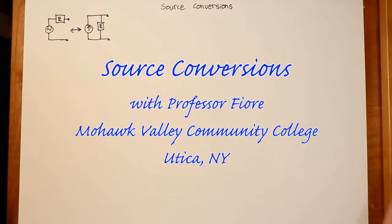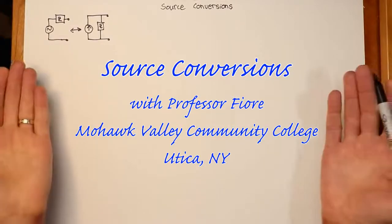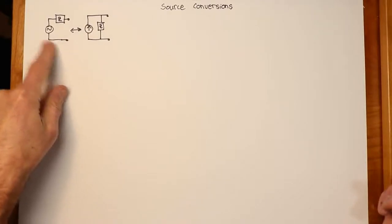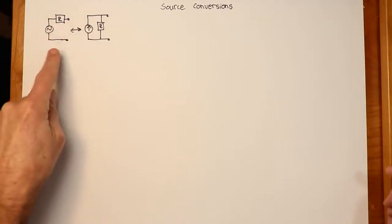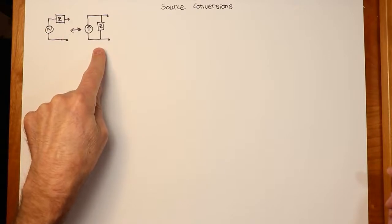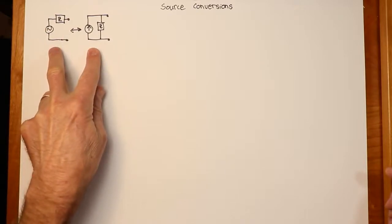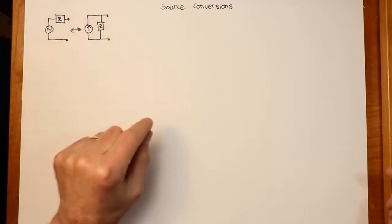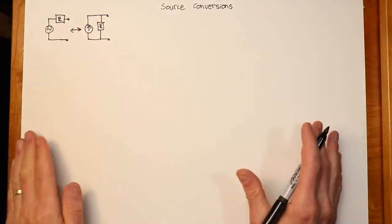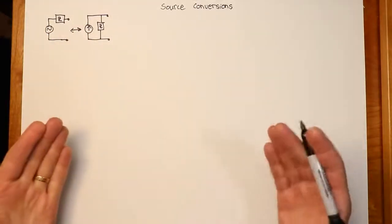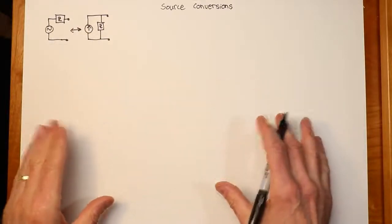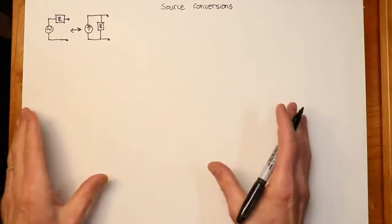In this video we're going to look at source conversions. The basic idea is that we can have a voltage source with a series impedance and a current source with a parallel impedance. If we get the values right we can replace one with the other and the remainder of the circuit will behave in the same exact way. This will help us in certain situations to simplify circuits and ease the burden of analysis.